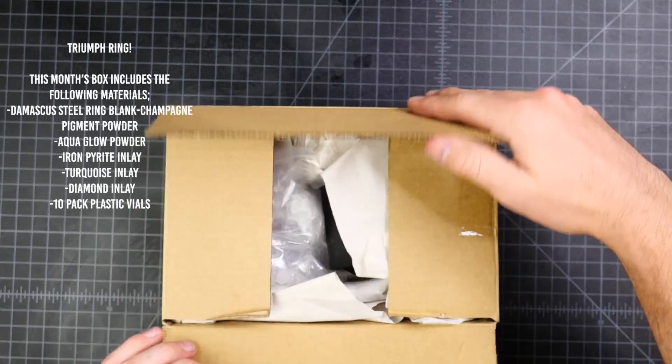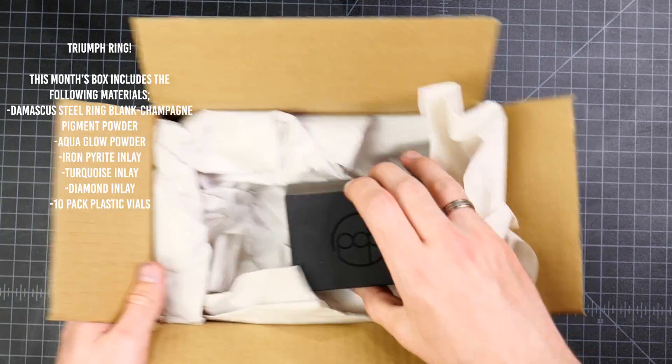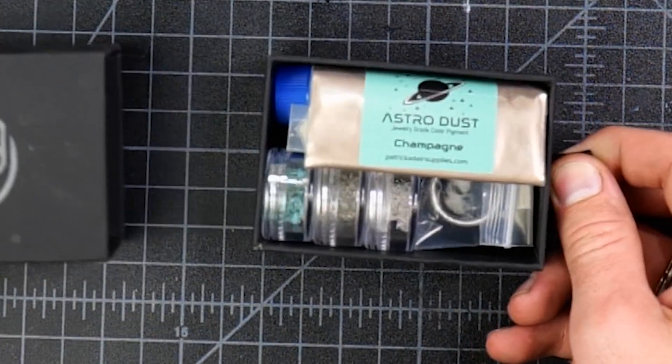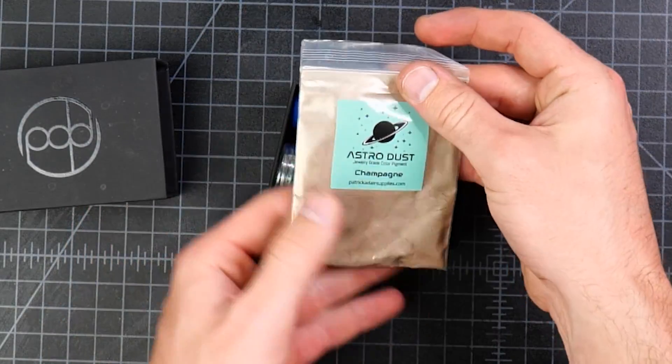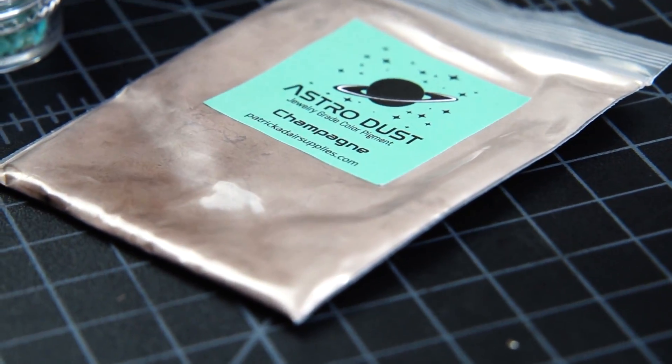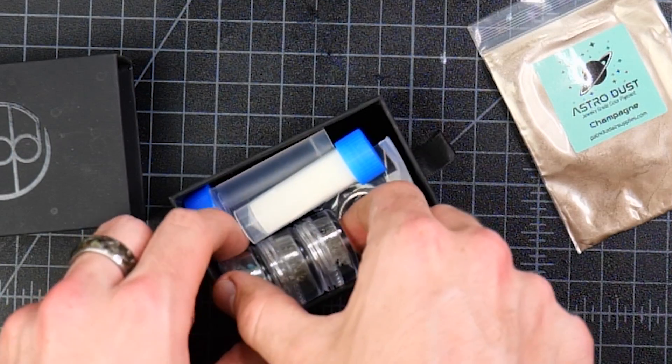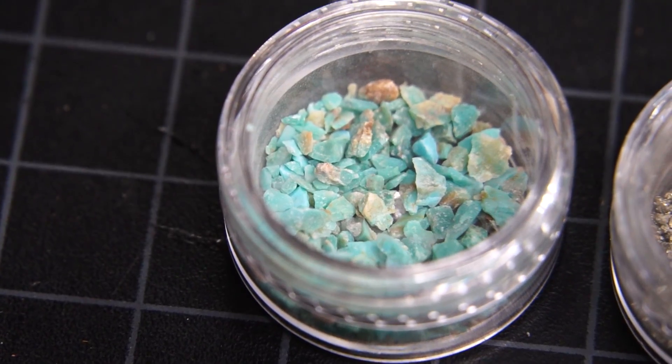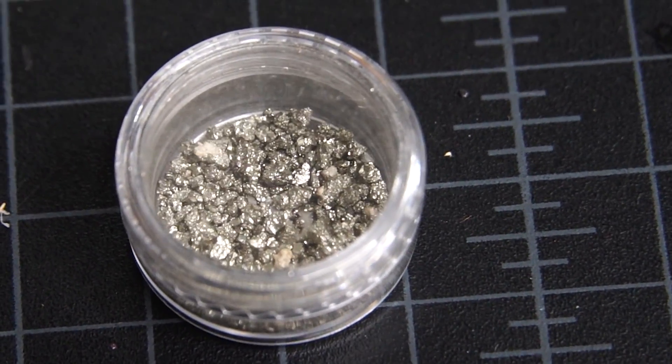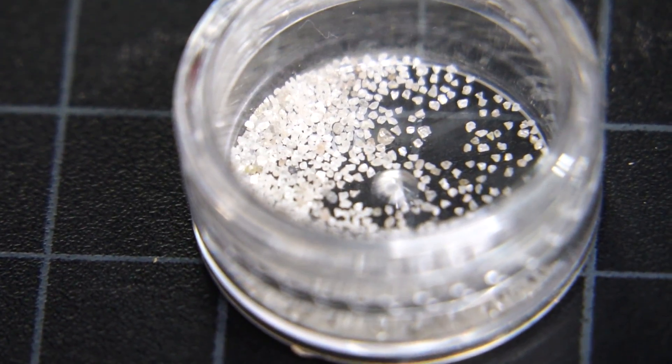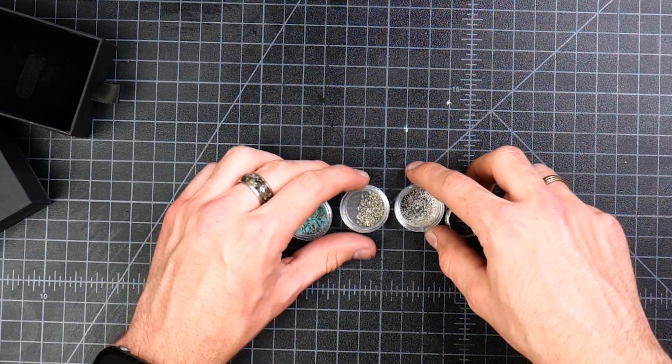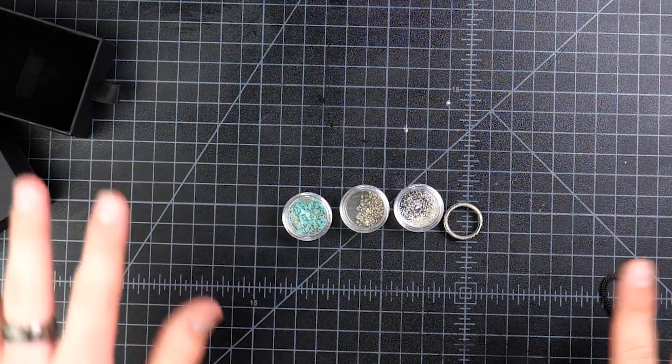If you didn't know already, the way the subscription box works is every single month we send you everything you need to create a ring, and we always pack it full of more than enough ingredients for what you need. For example, in this video I'm not going to be using several of the ingredients. I'm just going to keep it simple. I'm going to be using the Damascus steel ring blank, turquoise, pyrite, and our natural uncut diamonds. These are real actual diamonds. So I'll be setting aside the glow powder and the champagne color pigment.